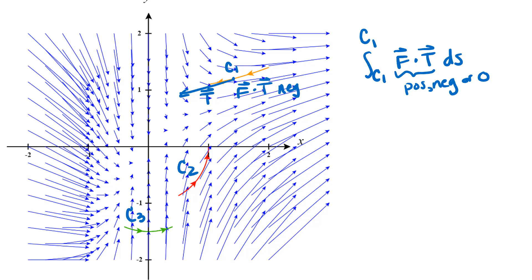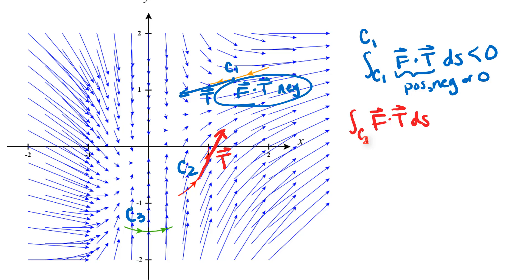Adding up all the F dot T values along C1 gives negative work. For C2, drawing the unit tangent vector, the T vector and the F vectors are nearly lined up with each other, forming acute angles all along that curve, so the F dot T values are all positive and the work integral is positive. You can think of it as the vectors in the vector field helping push the object along C2, whereas on C1 the vectors were pushing against the object's motion.